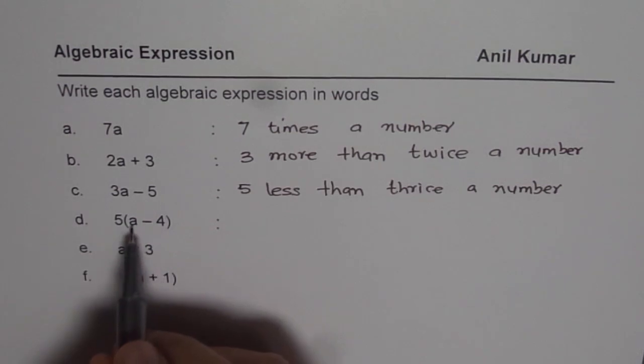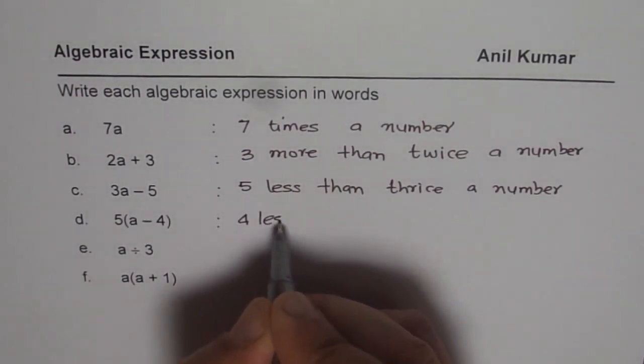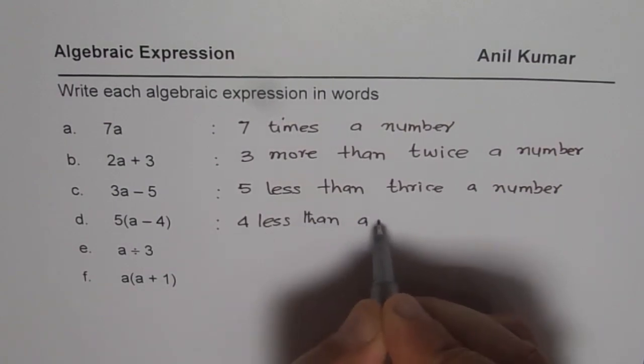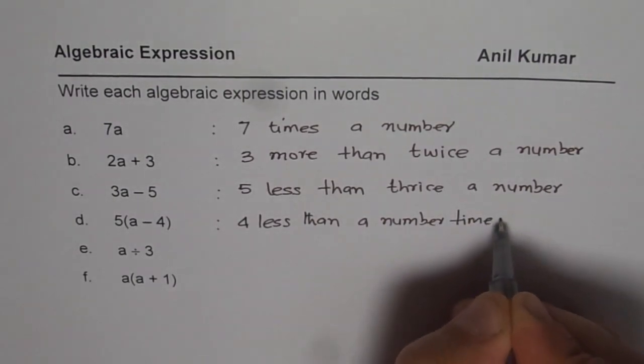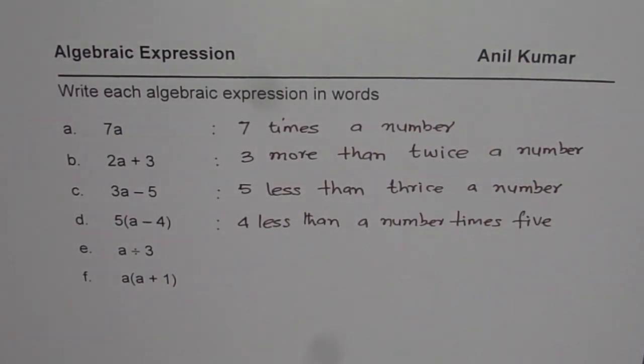So 4 less than a number times 5, do you understand? So we will say 4 less than a number, then you times it by 5, so times 5. So that is how it should be written. So if you do 5 times a number take away 4, it is going to be wrong.